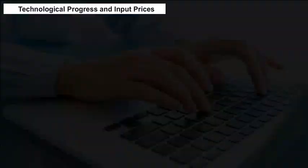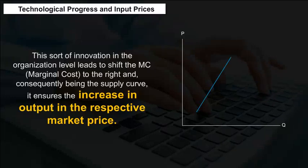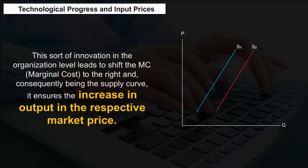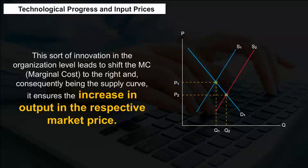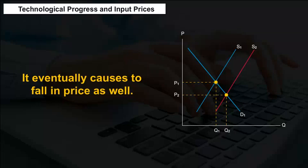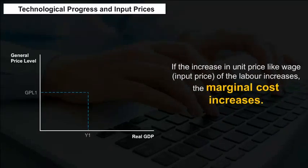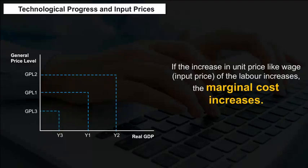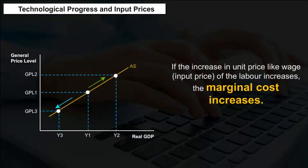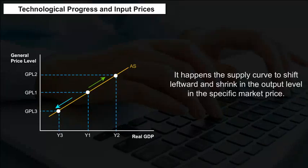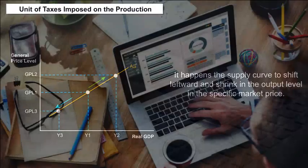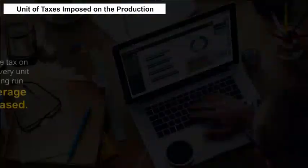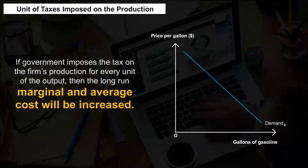Technological Progress and Input Prices. Technological progress allows the firm to use fewer inputs during production. This innovation at the organizational level leads to a rightward shift in the MC curve and consequently in the supply curve, ensuring an increase in output at the respective market price, and eventually causing a fall in price. If the unit price of inputs — like the wage or labor input price — increases, the marginal cost increases, shifting the supply curve leftward and shrinking output.